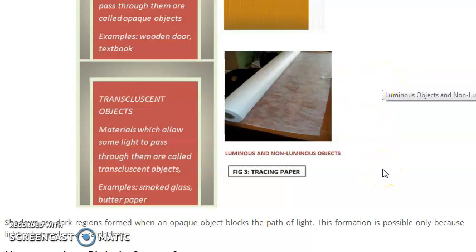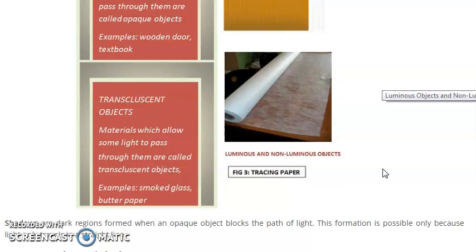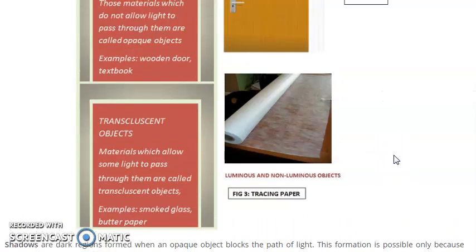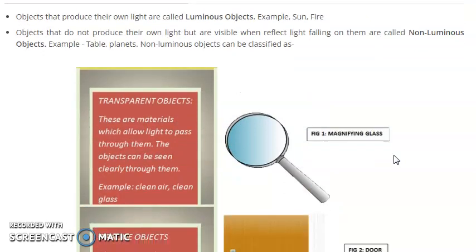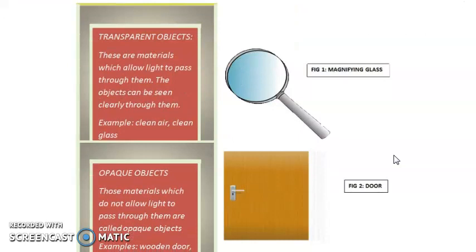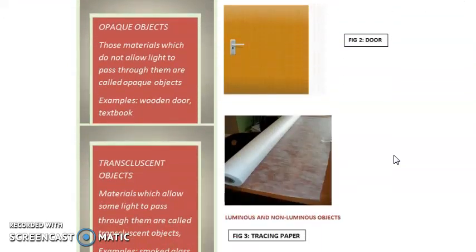Hello good morning students, we are discussing chapter number 11 light shadow and its reflection. So today in the last video we have discussed about objects which are luminous and non-luminous and transparent object which is a part of non-luminous object. Students today we are going to discuss this topic further, the next is the remaining two types of non-luminous object.